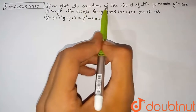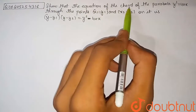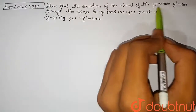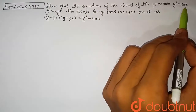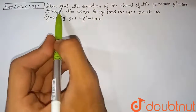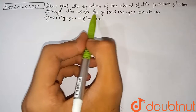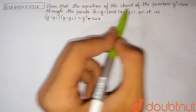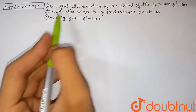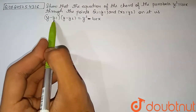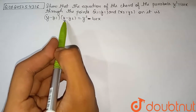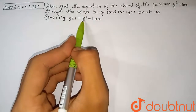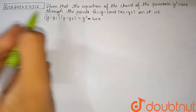Show that the equation of the chord of the parabola y² = 4ax through the points (x1, y1) and (x2, y2) on it is given by (y − y1)(y − y2) = y² − 4ax.